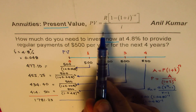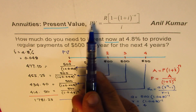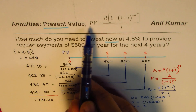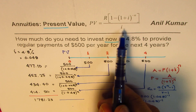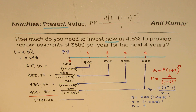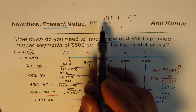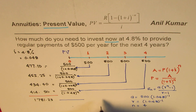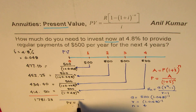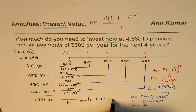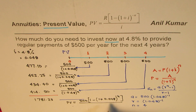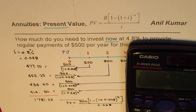A combination of these steps gives a simplified formula for present value: PV equals the regular payment R times [1 − (1 + i)^(−n)] divided by i. We can use this formula directly. So present value equals 500 times [1 − (1 + 0.048)^(−4)] divided by 0.048.